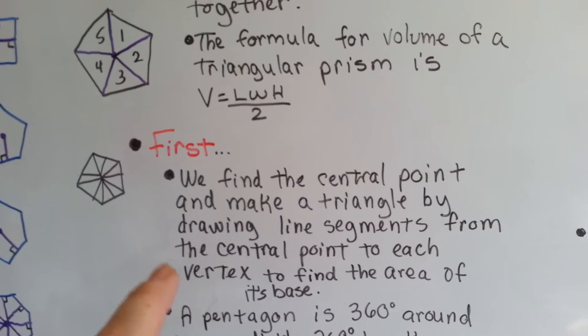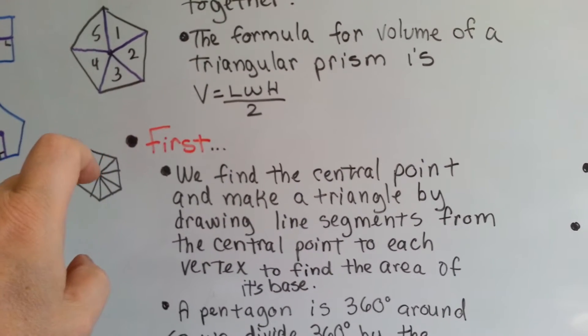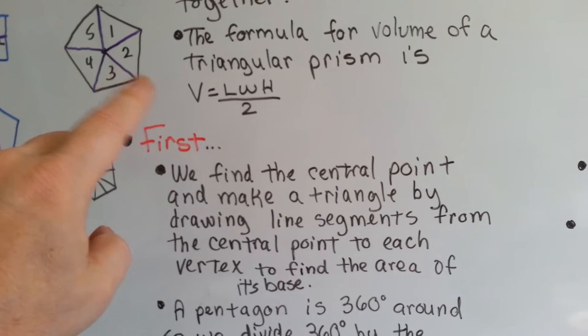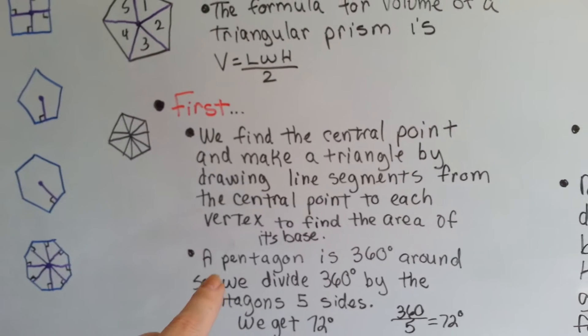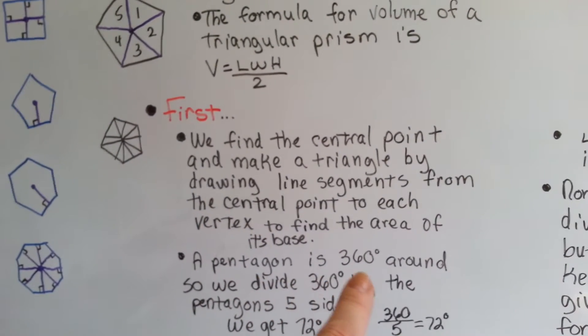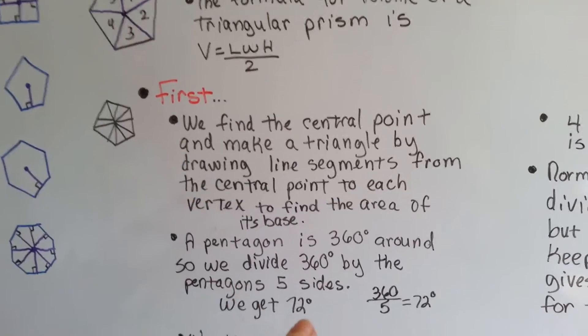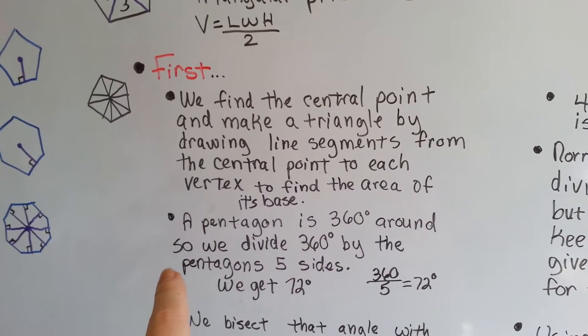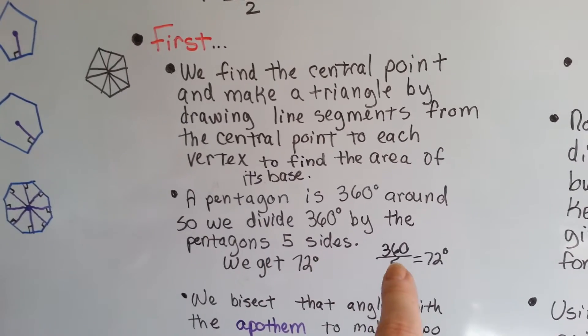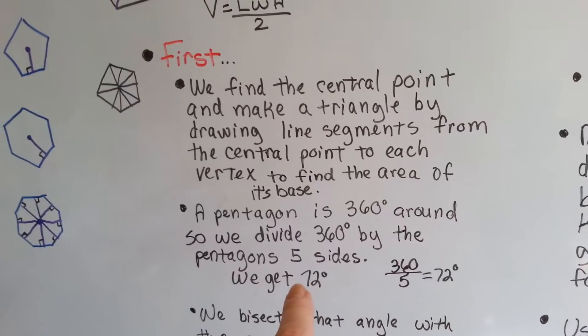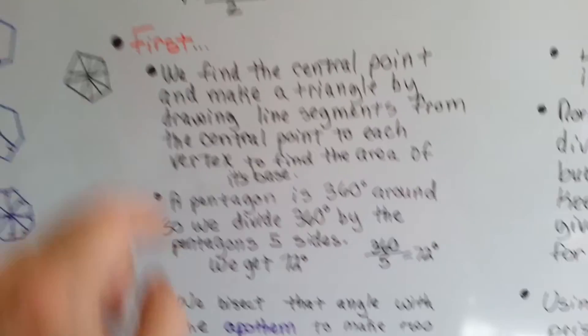The first thing we've got to do is find the central point and make a triangle by drawing line segments from the central point to each of the vertex to find the area of the base. A pentagon is 360 degrees around and it'll give us the angle measure inside of here. It's 360 degrees around, it's got five sides, so we divide 360 by 5 and we get 72 degrees. Each one of these angles inside of here are 72 degrees.